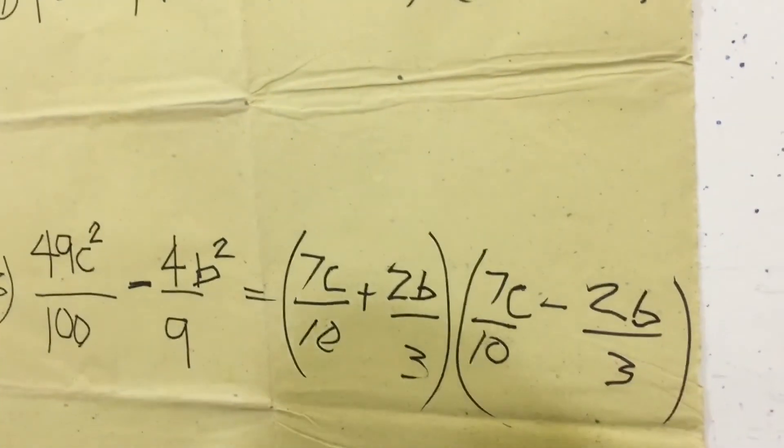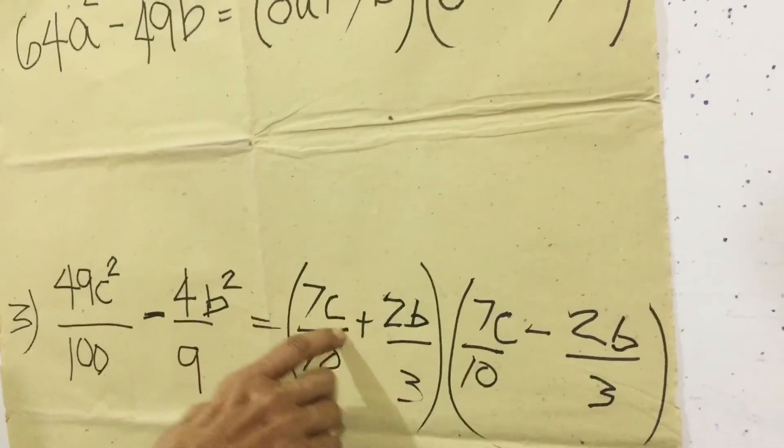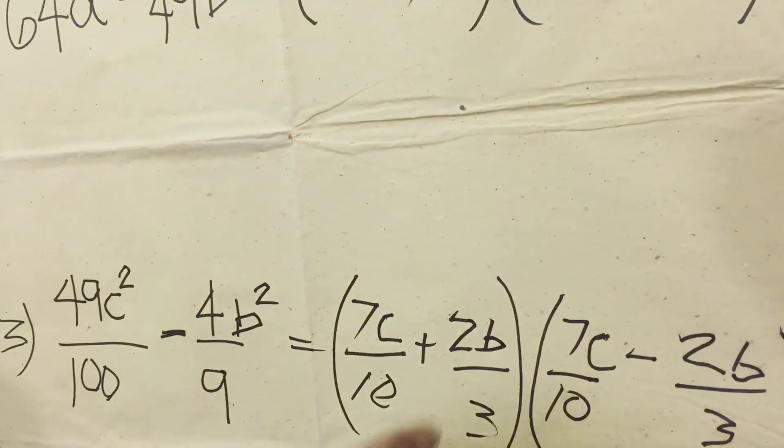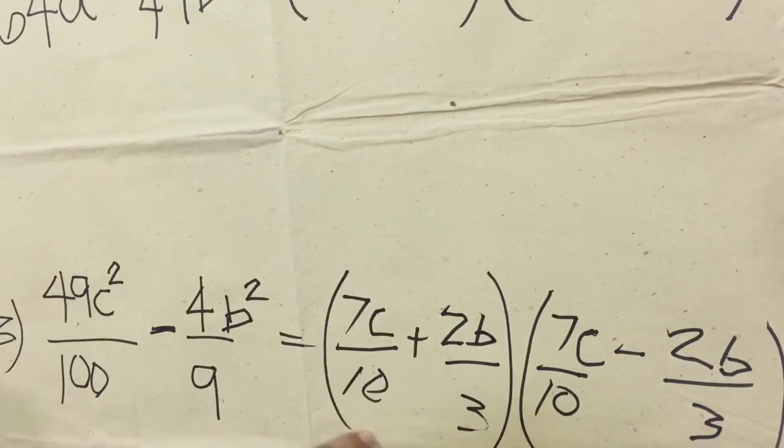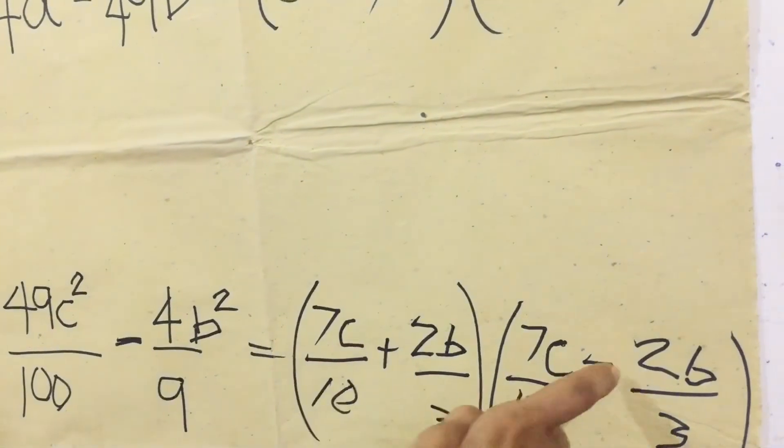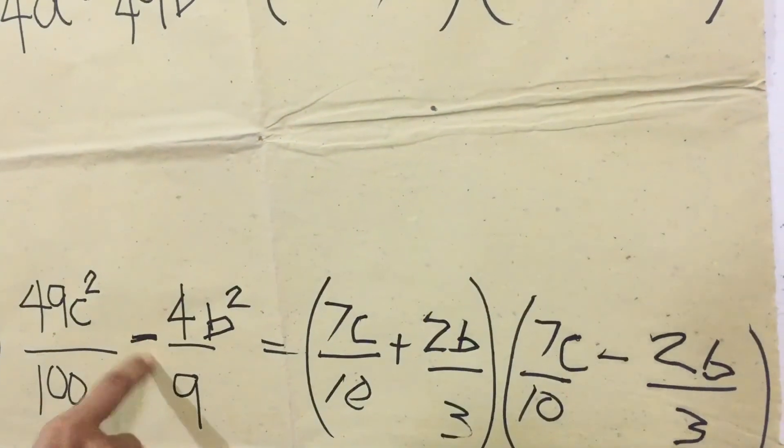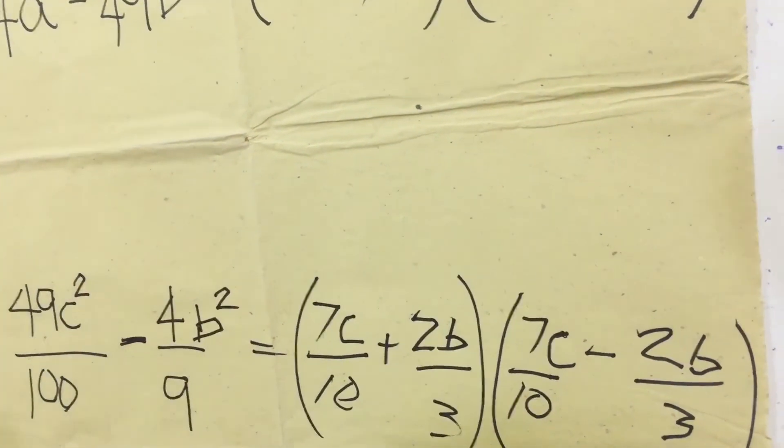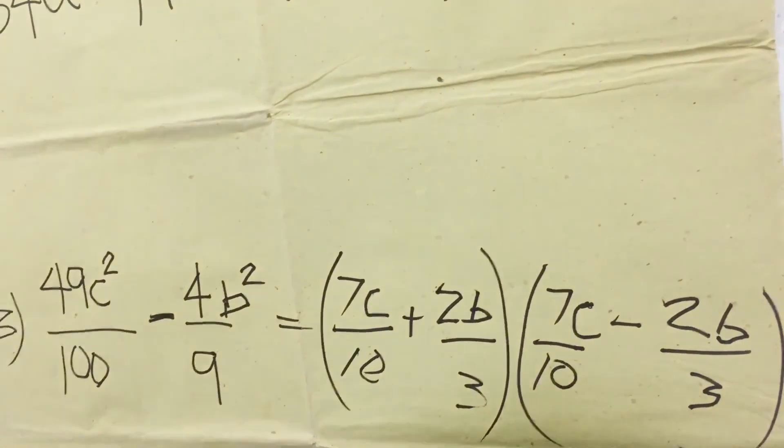And we're going to check. 7C times 7C equals 49C-squared. Then 10 times 10 equals 100. Positive times negative equals negative. 2B times 2B equals 4B-squared. Then 3 times 3 equals 9.